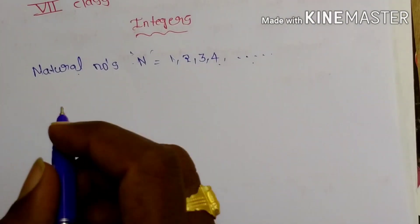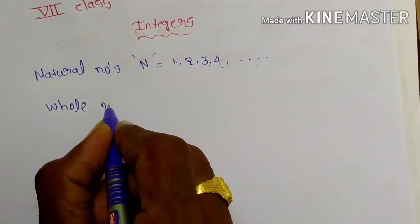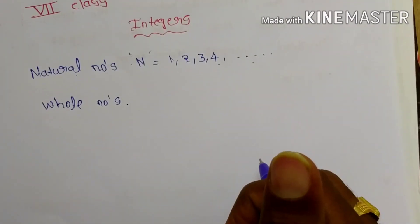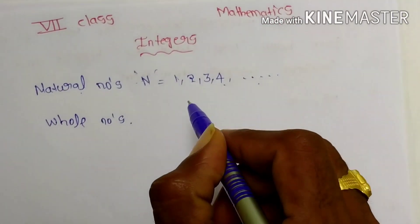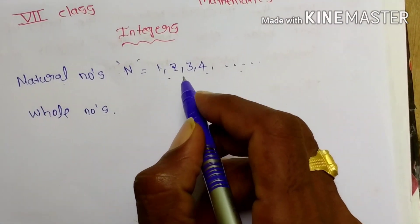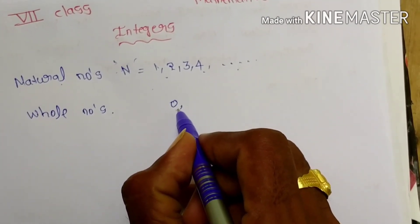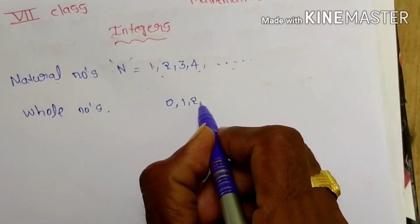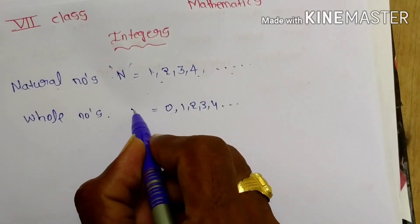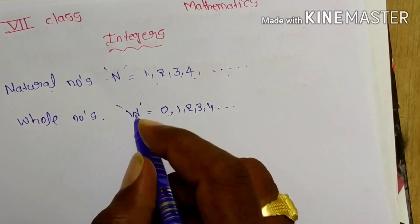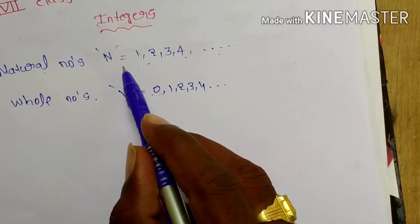Next, we have to know about whole numbers. Just including 0 to the natural numbers gives us whole numbers. We include 0 along with the natural numbers 1, 2, 3, 4 and so on. These numbers can be represented by W. So whole numbers are 0 included with the natural numbers.